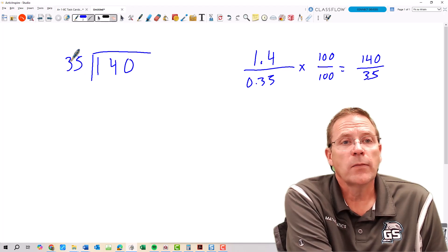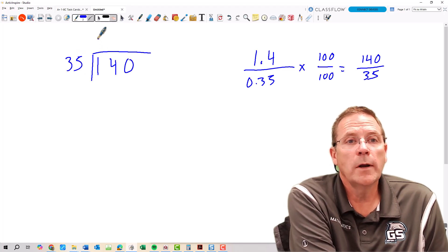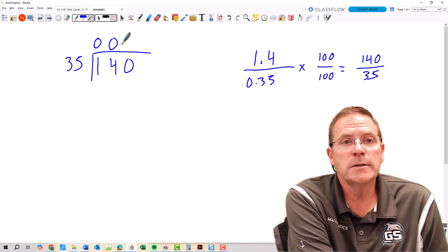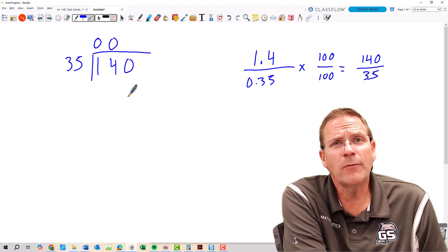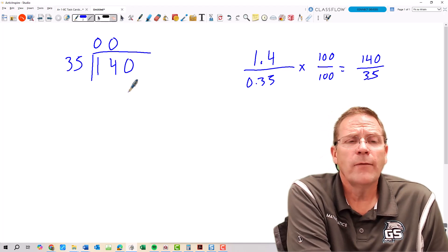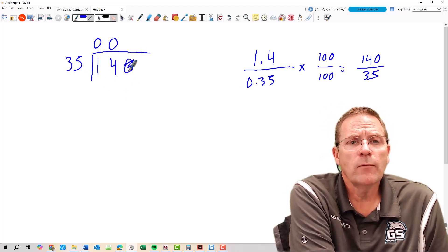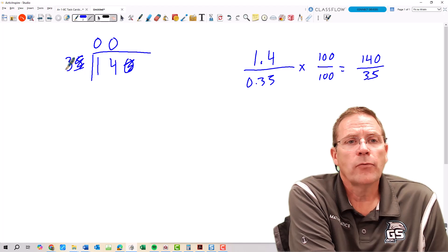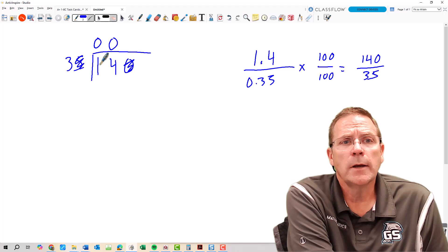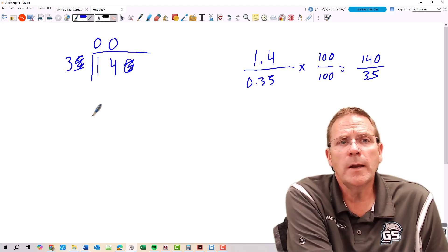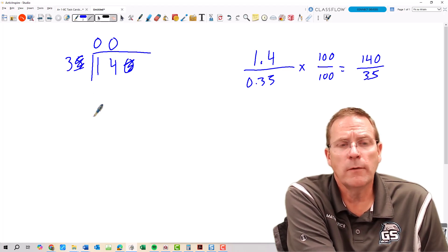From here we can take and say 35 goes into 1 zero times, 14 zero times. Now it does go into 140 but I'm not really sure how many times. If I was to take and say, well let's get rid of this last digit, 3 would go into 14 four times, 4 would go into 14 three times. So it's going to be a number somewhere between 3 and 4.